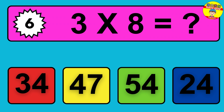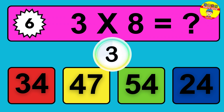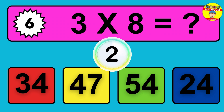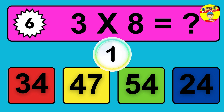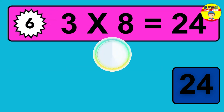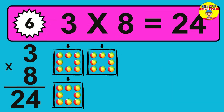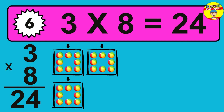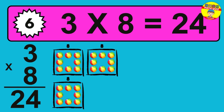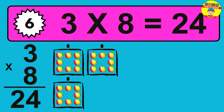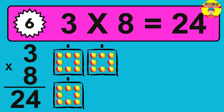Question 6. 3 times 8 equals what? So the answer is 3 times 8 is 24. To calculate, we have 3 groups with 8 balls each one. So how many balls do we have? 24 balls.